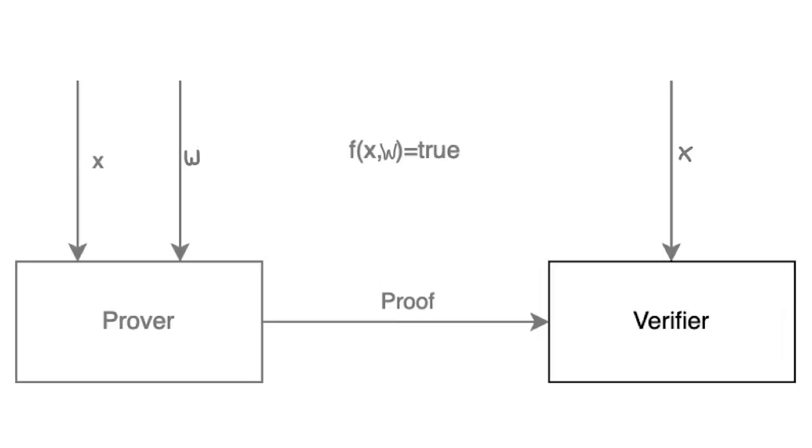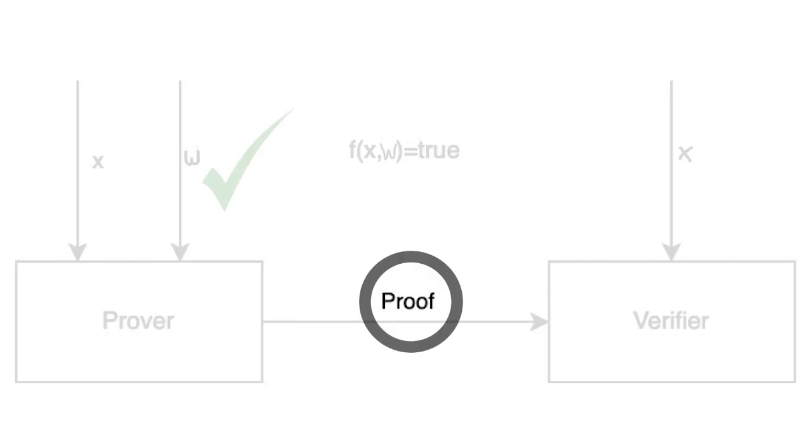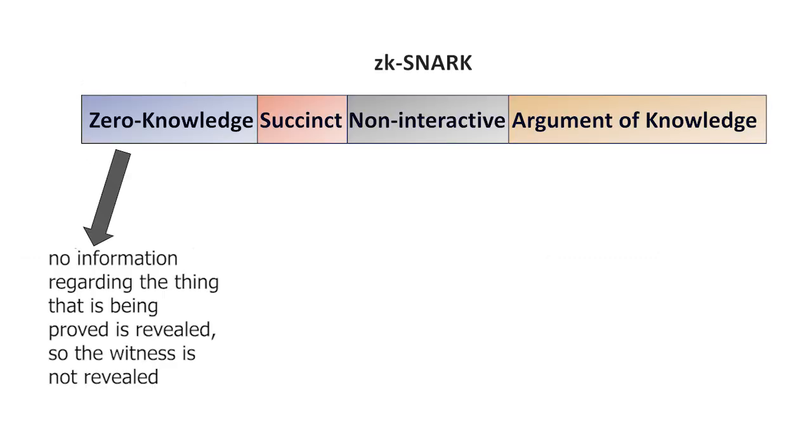You can see that both parties also have a piece of public information which is called the public statement and represented by x. So the way the prover can prove to the verifier that the secret witness is correct without the prover showing the verifier the witness is made possible through a mathematical proof called ZK-SNARKs.